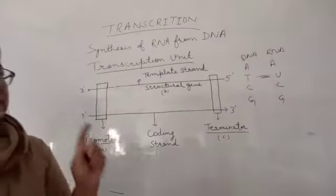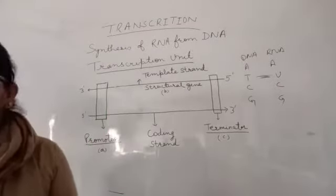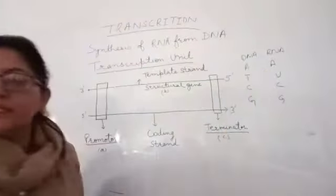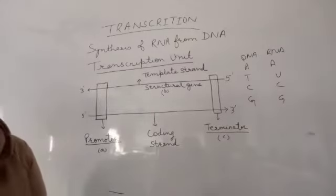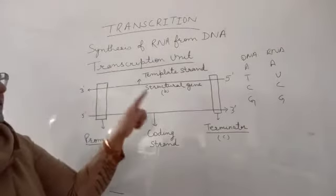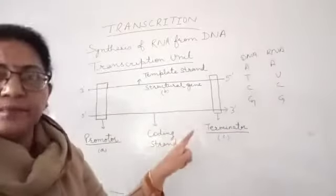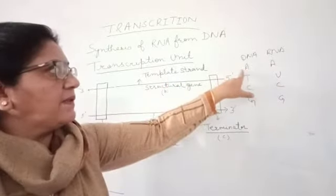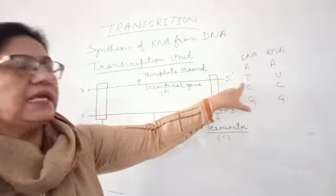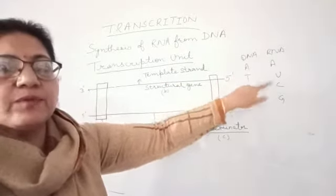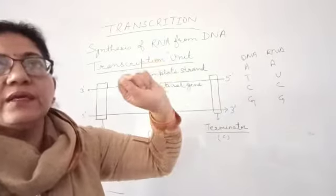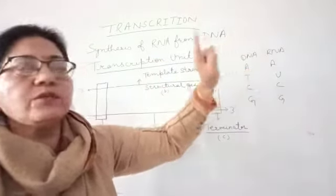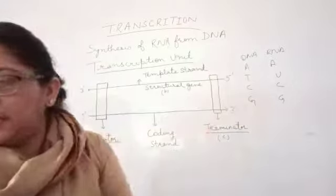This difference is very important because when the synthesis of RNA takes place from a segment of DNA, then wherever T is present in the DNA segment we have to write U. So A is opposite to U in the RNA.